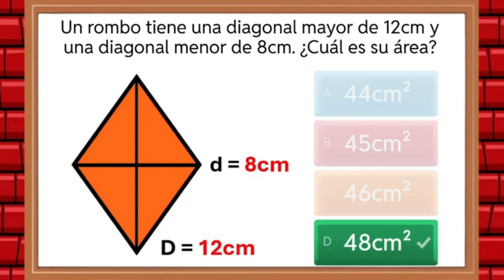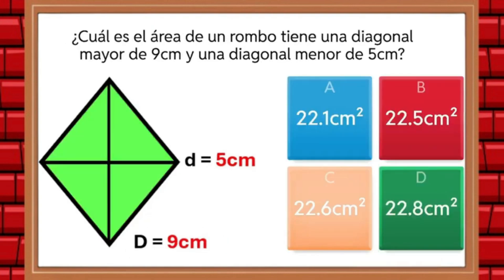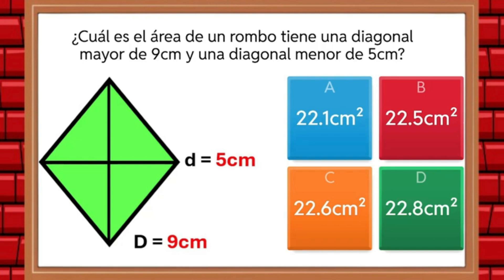Look at the following image. What is the area of a rhombus that has a major diagonal of 9 centimeters and a minor diagonal of 5 centimeters? The answer is 22.5 square centimeters.